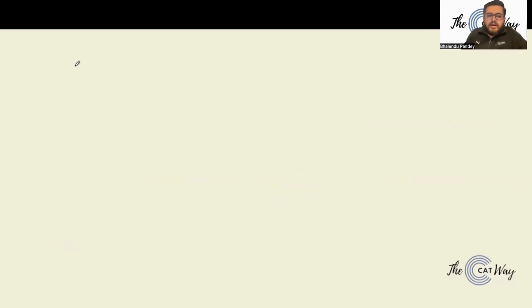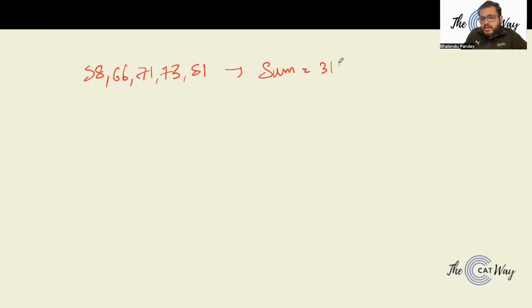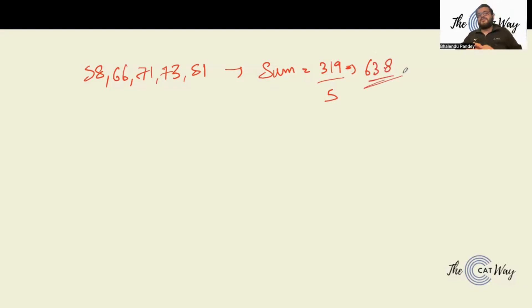Let's take another example. Five students have weights of 58, 66, 71, 73, and 51. The sum is 319, divided by 5 students, giving an average weight of 63.8 for this class.